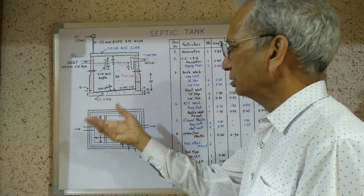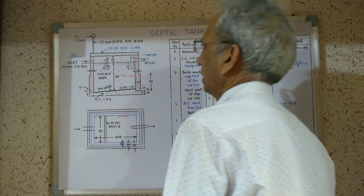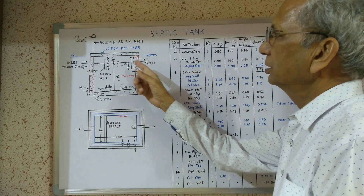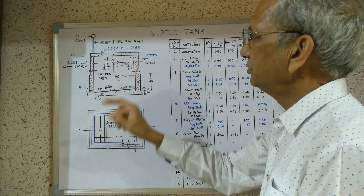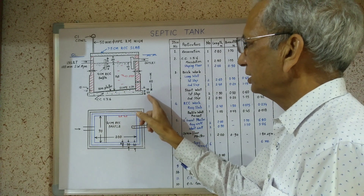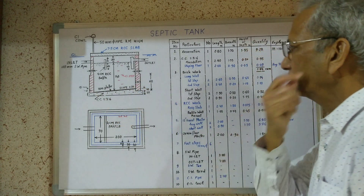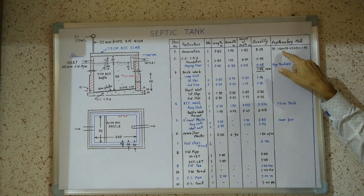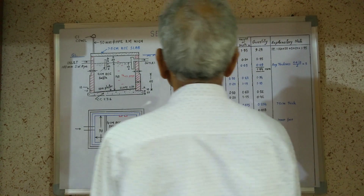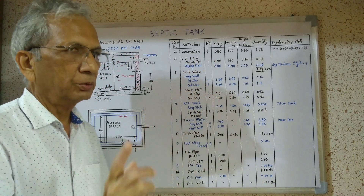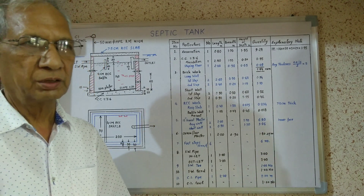The first item is excavation. The ground level is here and the depth will be: 30 cm plus 140 cm plus 20 cm plus the sloped floor 5 cm, therefore the depth will be 140 plus 30 plus 5 plus 20 equals 1.95 meters. For this excavation item we will not apply the long wall short wall method or centerline method — we will calculate directly.